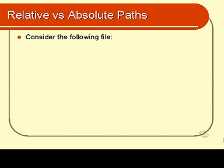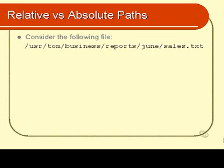Consider the following file: it's the sales.txt file inside the dune directory, which is a subdirectory of reports, which is a subdirectory of business, all the way up to user. Now, if you wanted to access that particular file — if you needed to print it out, edit it, or do something to it — how would you refer to it?